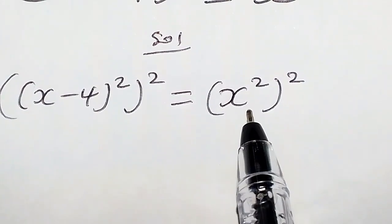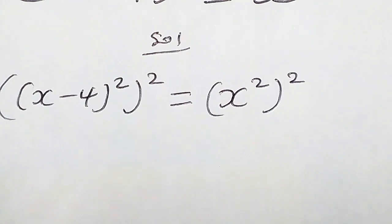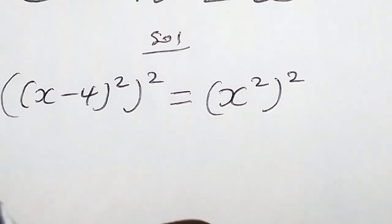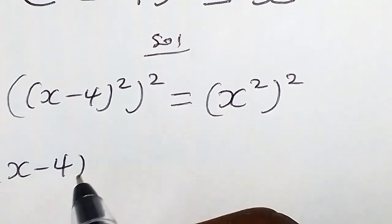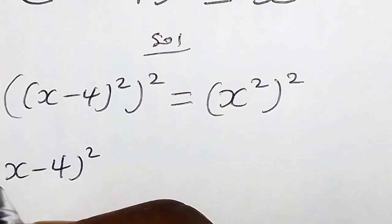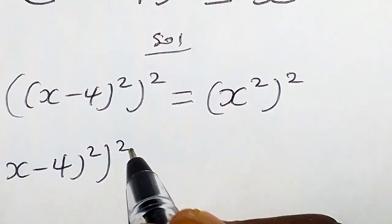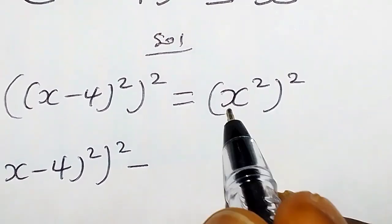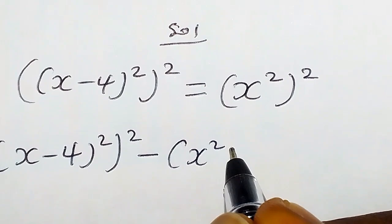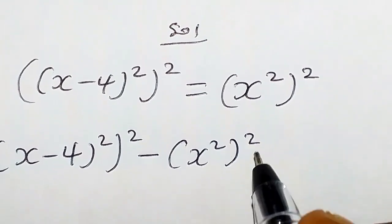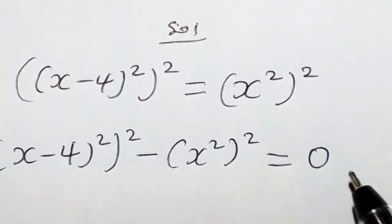Now let's bring the right hand side to the left, so we have (x minus 4) squared, times 2, minus x squared, squared, which equals 0.